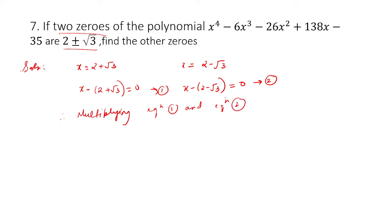We are using a reverse of splitting the middle terms. If you remember, splitting the middle terms gives a quadratic equation, then two factors, then finally factors of the form we need. So we multiply: x minus 2 plus root 3, into x minus 2 minus root 3.